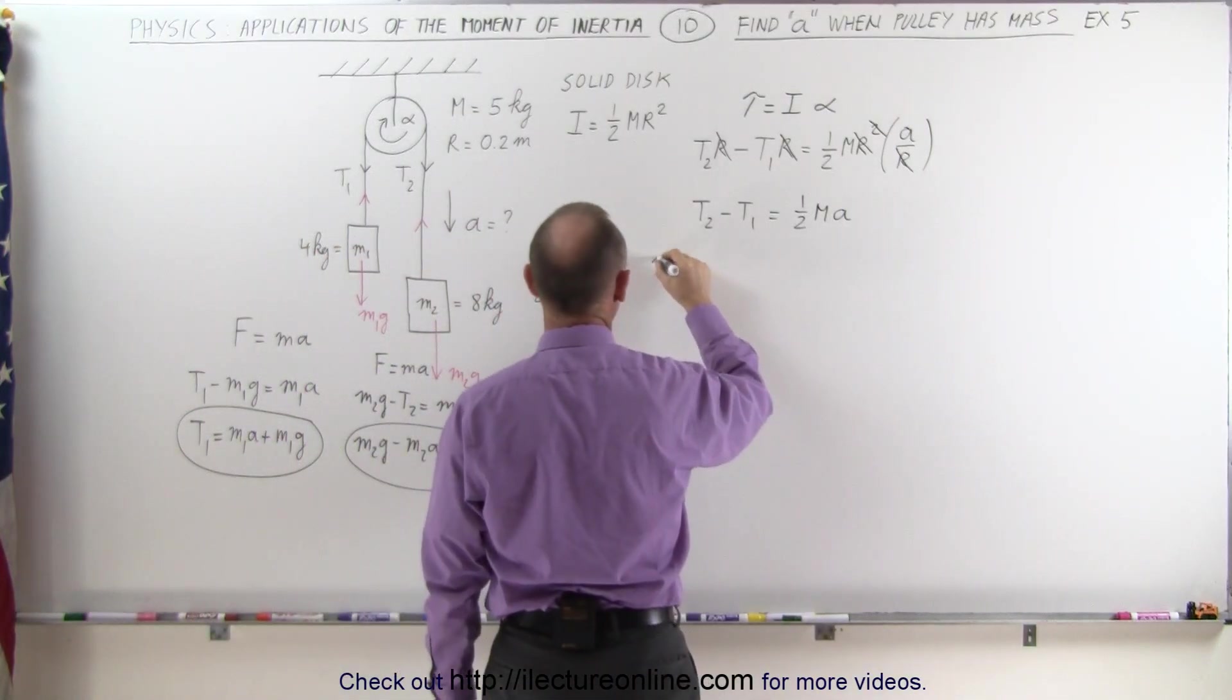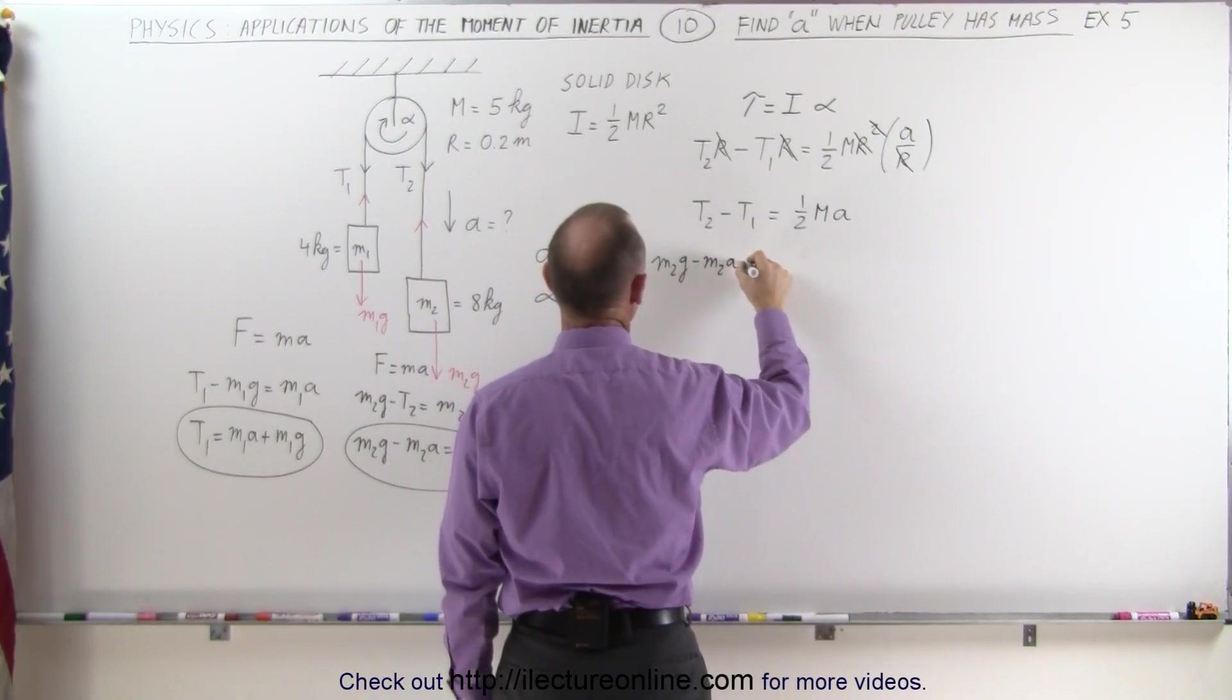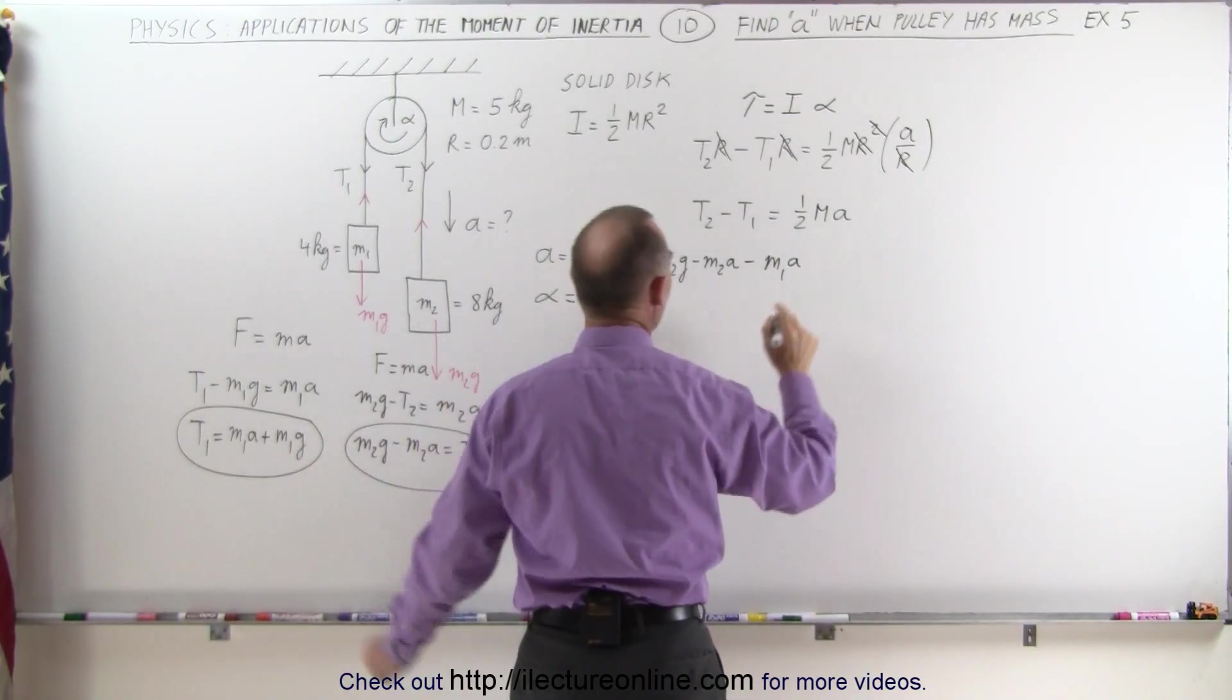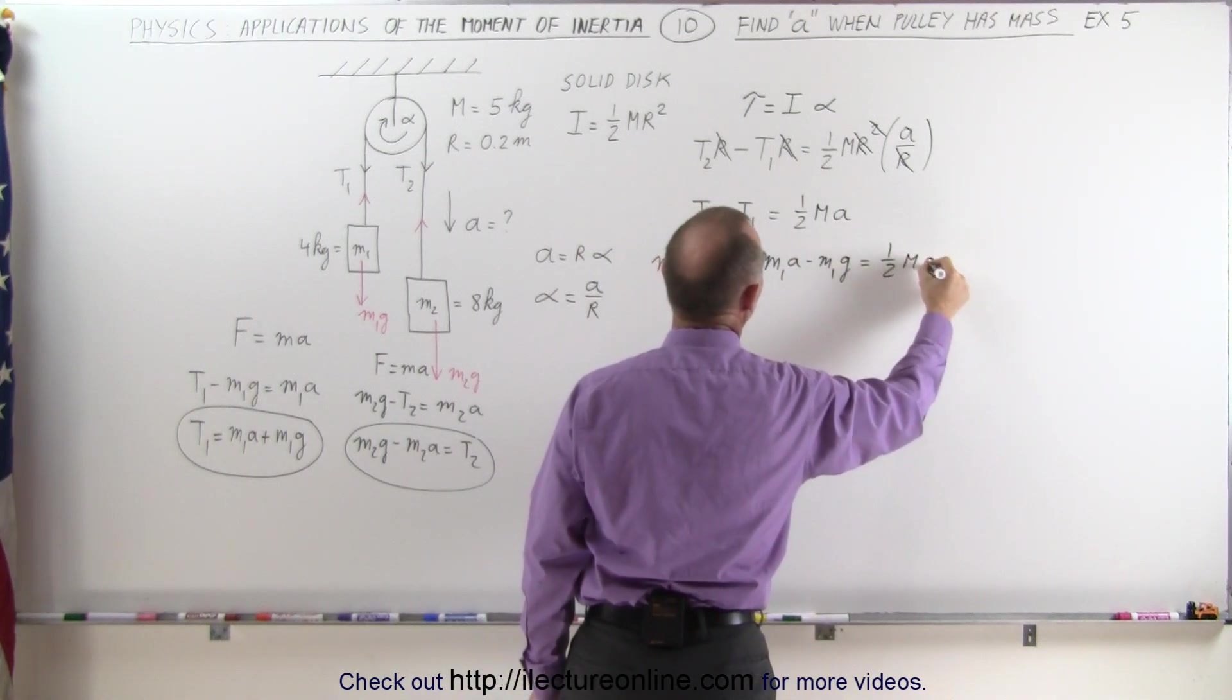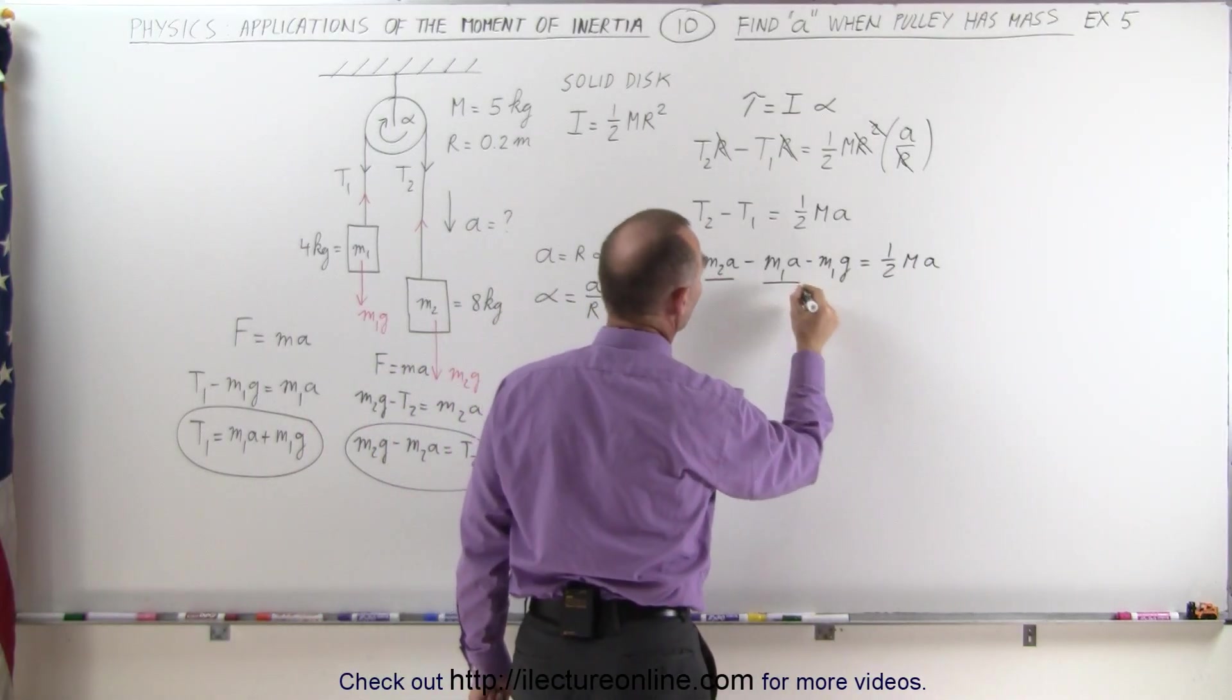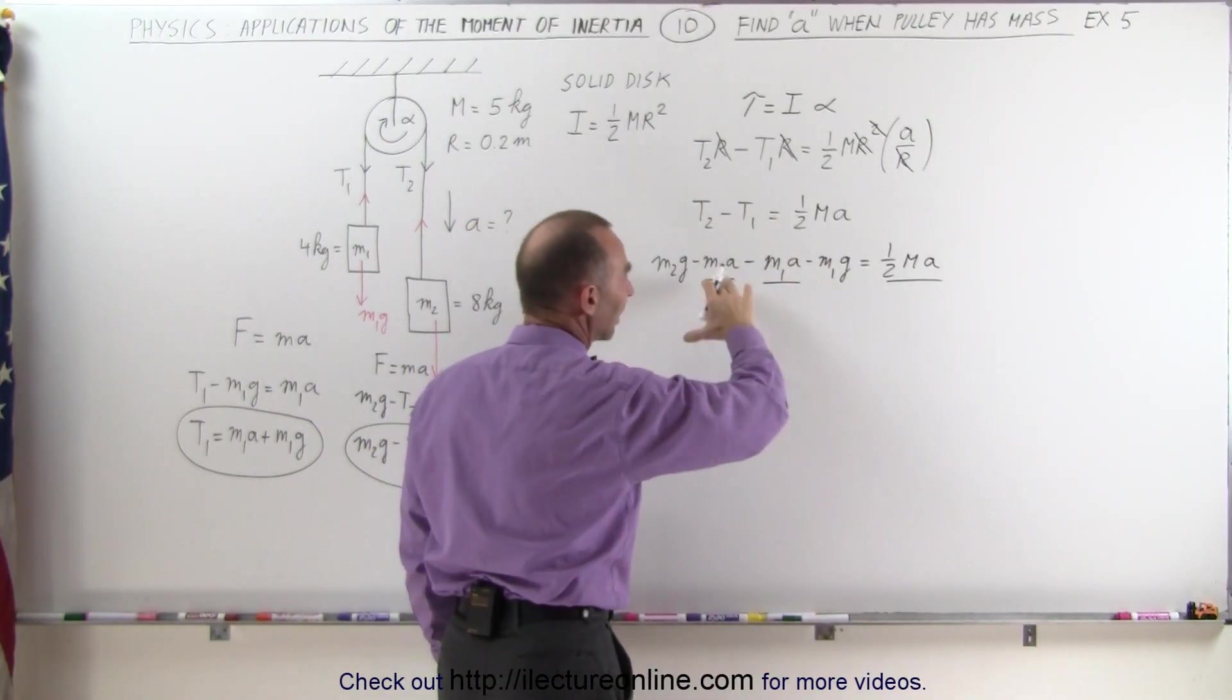T2 can be written as M2G minus M2A. Subtract from that T1, which is equal to M1A, and I will subtract M1G. And this is equal to 1 half, the mass of the pulley, times acceleration. Now notice the equation only has one unknown left, the acceleration. It's in this term, this term, and this term.